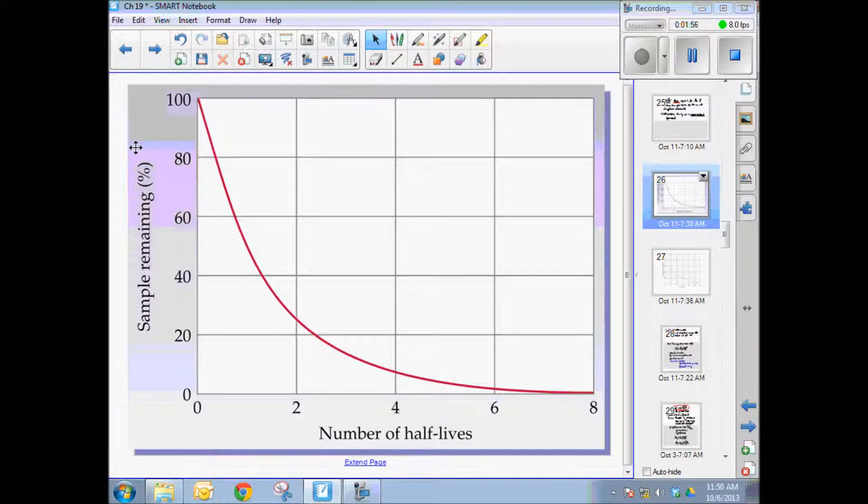And so if we go to the graph and we just find 50% is right about here, we go over to the curve and drop down. That's exactly one half-life. 50% of 50%, in other words, another half-life would be around 25%. And I'm going to guess that's right about here. So again, go over to the curve and drop down. You are at two half-lives.